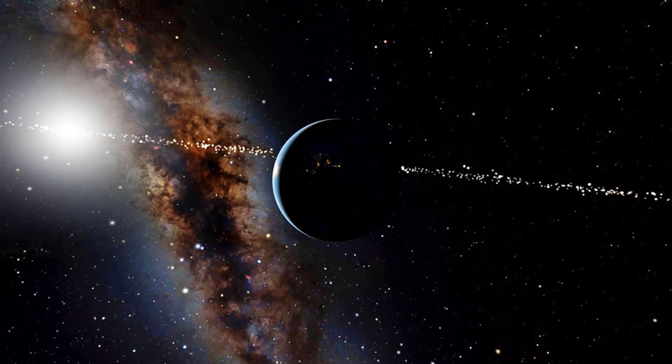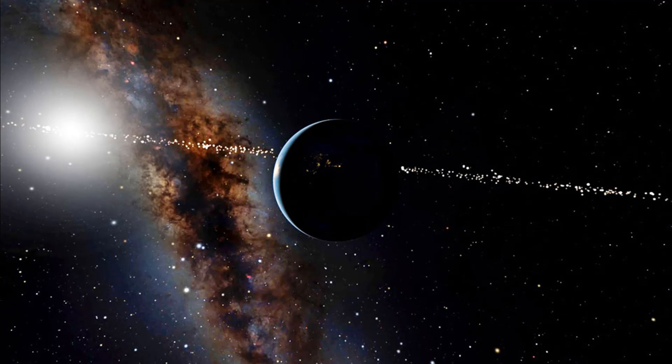including Ross 128 and Trappist-1, with its septet of rocky worlds.